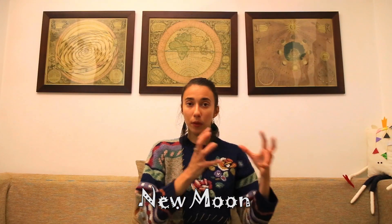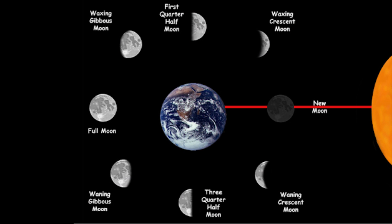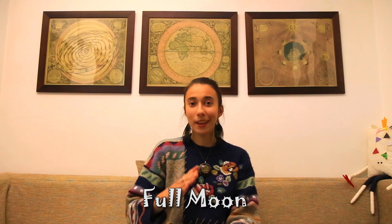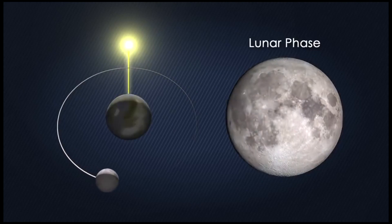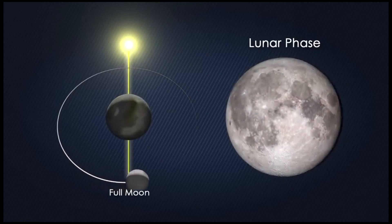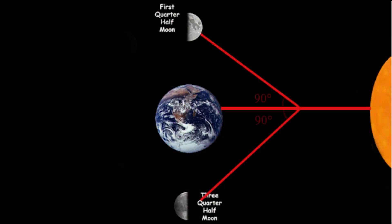The New Moon happens when the Moon, the Earth, and the Sun all lie approximately on the same line. Because the Sun is behind the Moon from our perspective here on Earth, the side of the Moon that is facing us is basically dark. So in this situation of the New Moon, the Moon is positioned between the Earth and the Sun. On a Full Moon, the Earth, the Sun, and the Moon also lie approximately on the same line, but this time the Moon is on the opposite side of the Earth, so the Sun illuminates the whole side that is facing us — the Earth is in between the Sun and the Moon.